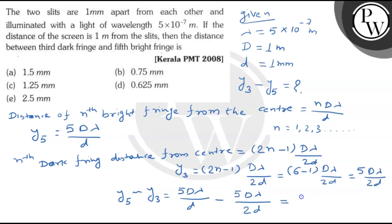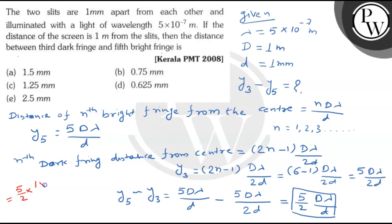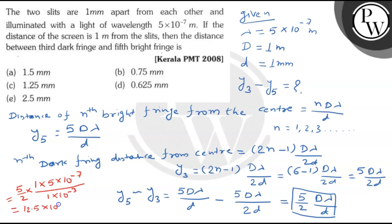Now we substitute the values: (5/2) × D × λ / d = (5/2) × 1 meter × 5 × 10⁻⁷ / (1 × 10⁻³ meter) = 12.5 × 10⁻⁴ meter = 1.25 mm.